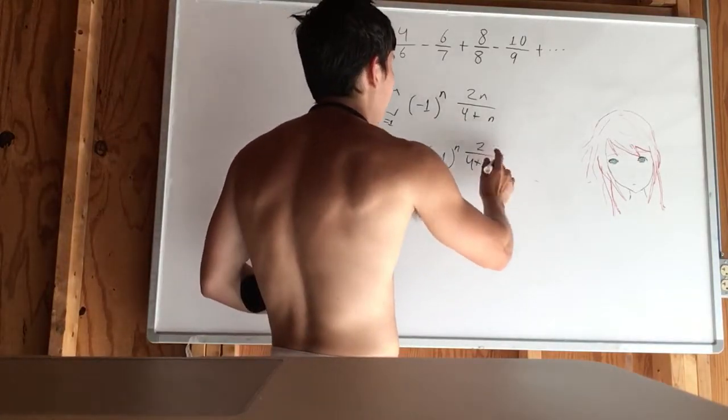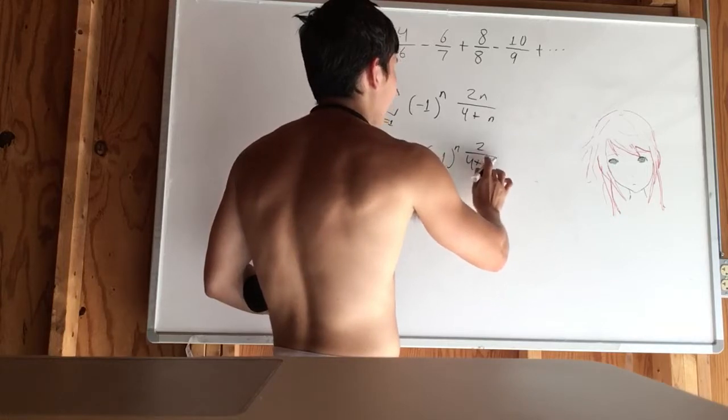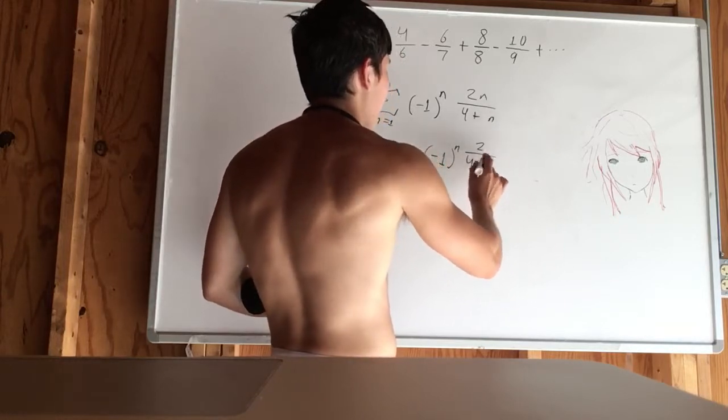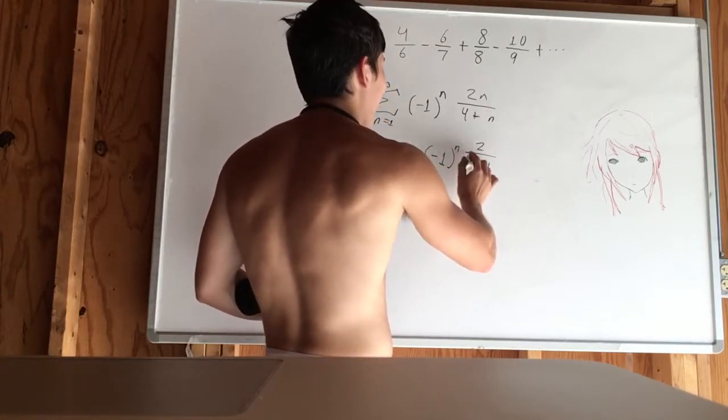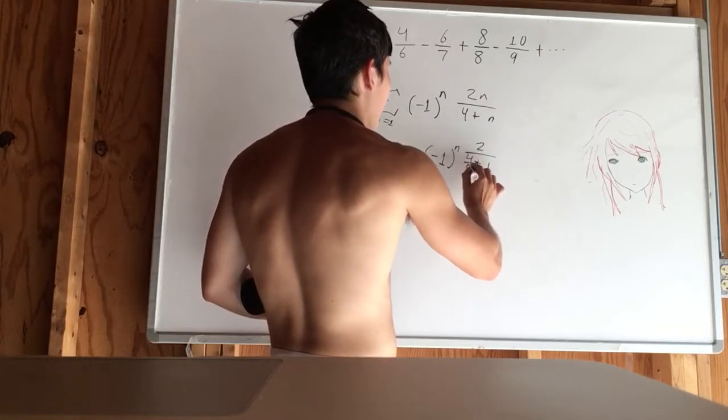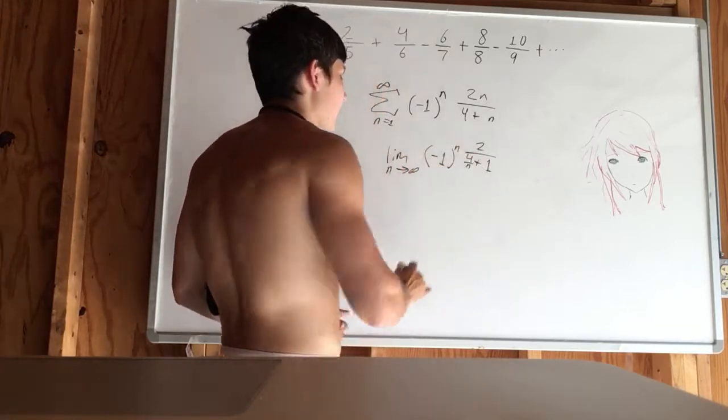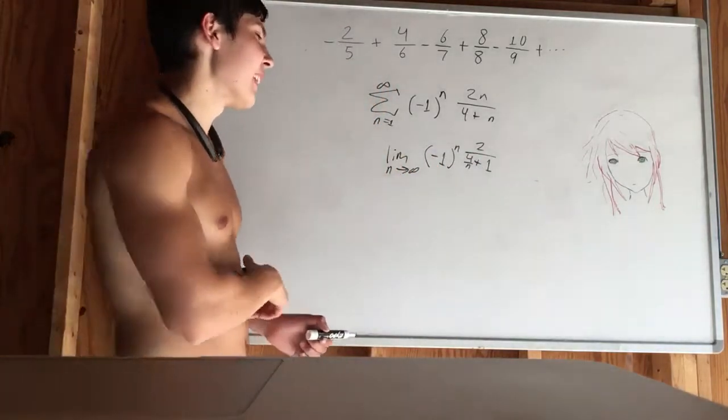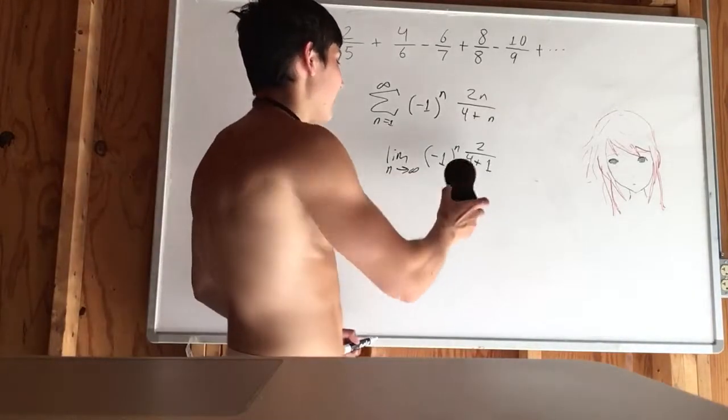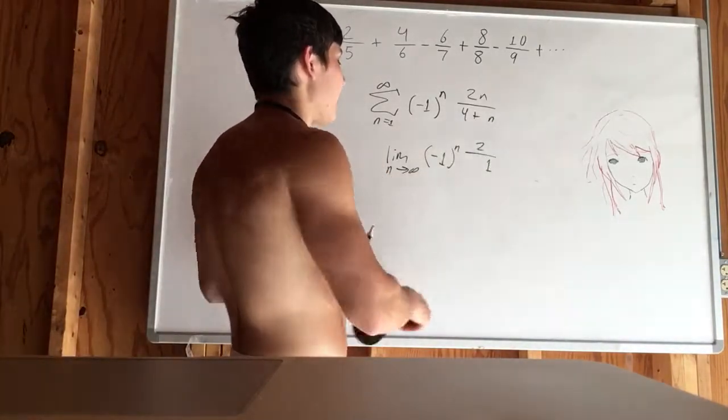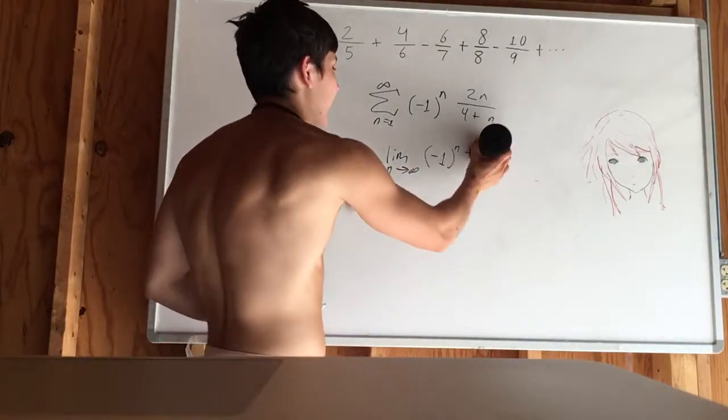So we could have 2, and then you divide this by n. This would go to 1. This would be 4 over n. We plug infinity into there. This goes to 0. And so we would have 2.